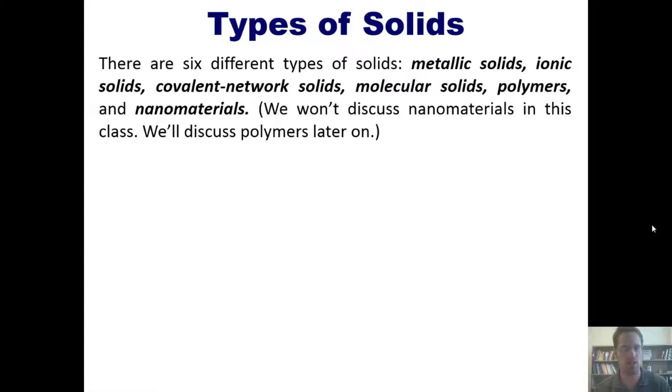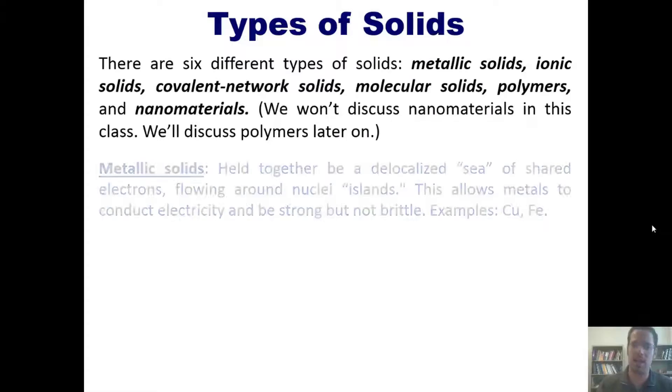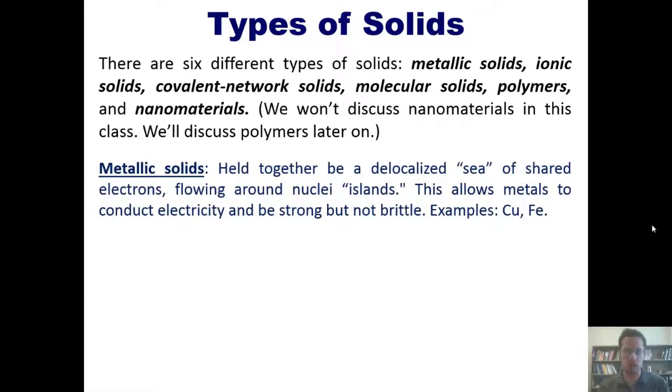With that said, let's get started. There are six different types of solids: metallic solids, ionic solids, covalent-network solids, molecular solids, polymers, and nanomaterials. We won't discuss nanomaterials in this class. We'll discuss polymers later on.